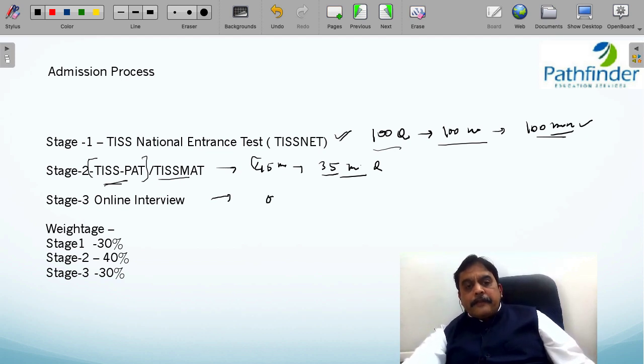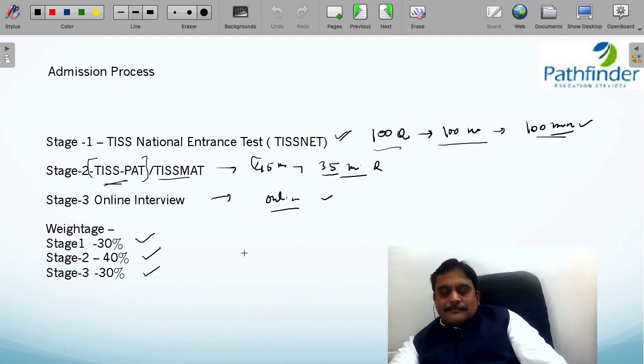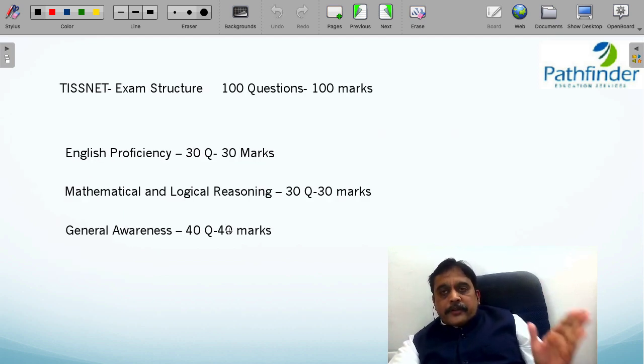Let me talk about the third stage. The third stage is an online interview. And all three stages have clear weightages: Stage 1 has 30% weightage, Stage 2 has 40% weightage, and Stage 3 has 30% weightage. Before you start your preparation, you need to have this basic information about the TISS admission process. It's a three-stage admission process. Let us now talk about TISNET. I am not going to talk about TISS MAT in this session. This session is totally focusing on the TISNET exam.